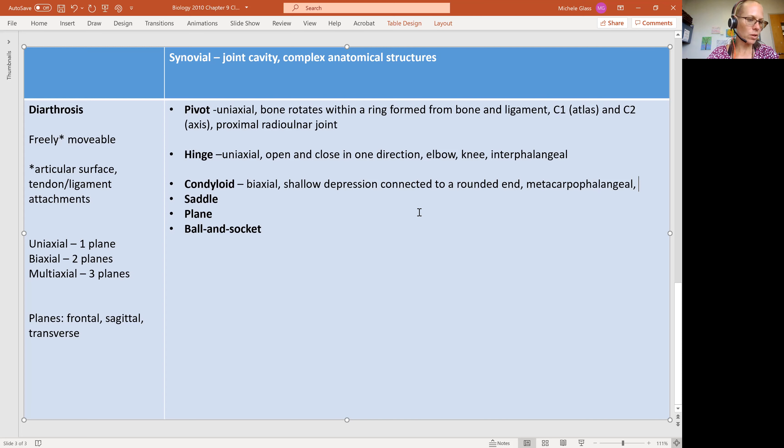And we get that also in the radiocarpal joint. So radiocarpal, that's your radius, and your carpal bones, which are your wrist bones.